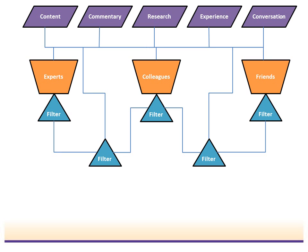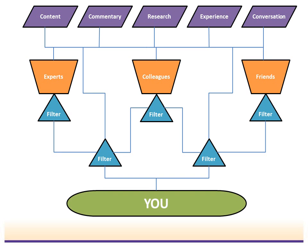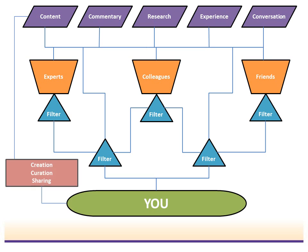By filtering using those online tools, you really get effective information and you're not overwhelmed by the amount of information coming to you. When you set up your network in this way, you end up with information flowing directly to you — information that you can use, that you care about, and that you can put to use in your work and personal learning. The last part of this learning network is the feedback loop: getting your information back into other people's learning networks by creating your own information, curating information, and sharing it back so other people can add you to their learning networks. That makes your personal learning network so much more useful and effective.